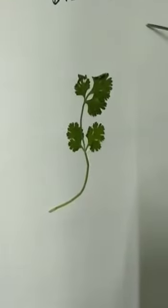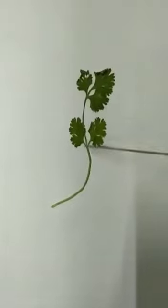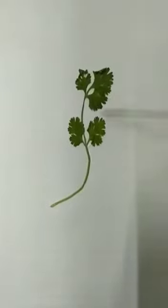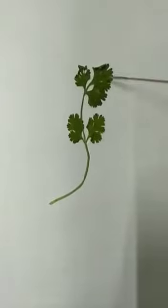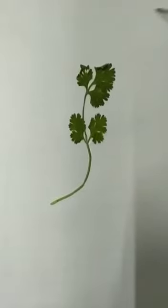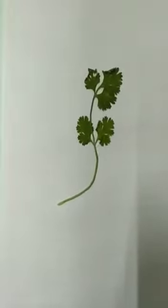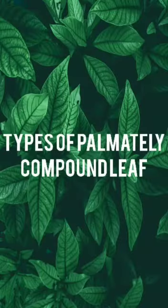The final pinnately compound leaf is known as decompound leaf. In a decompound leaf, the rachis branches many times and there is no proper shape. So this leaf is known as decompound leaf.